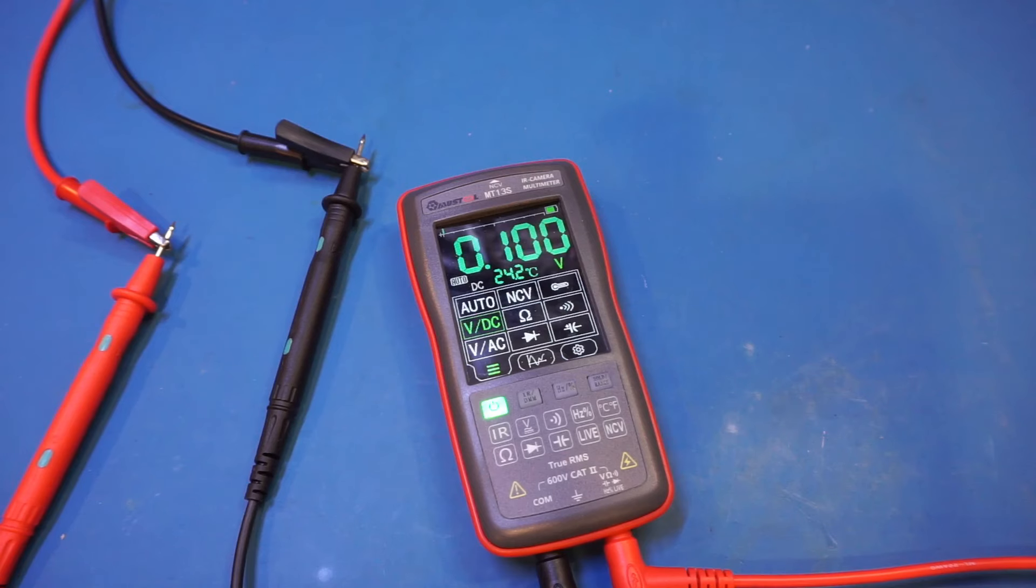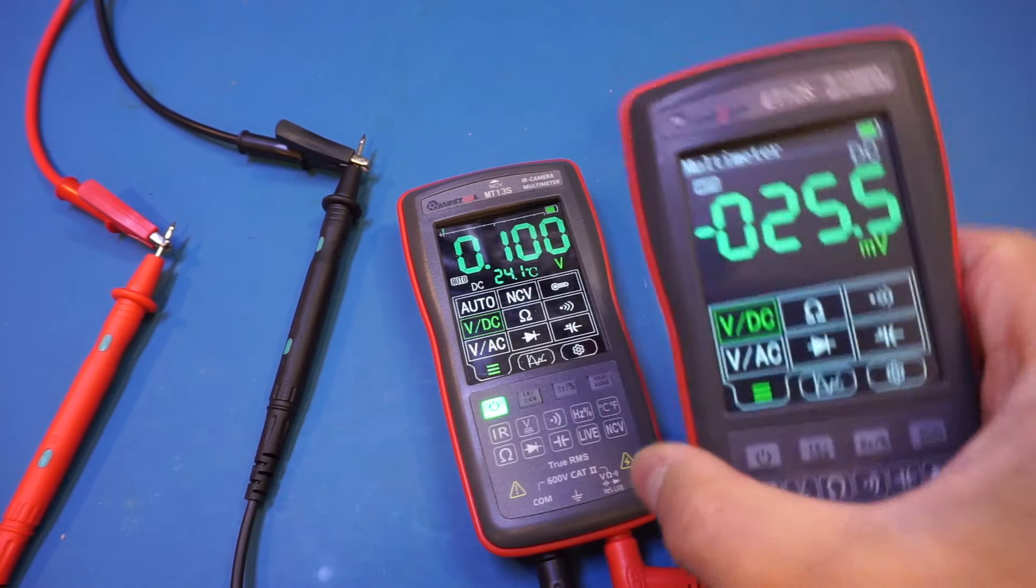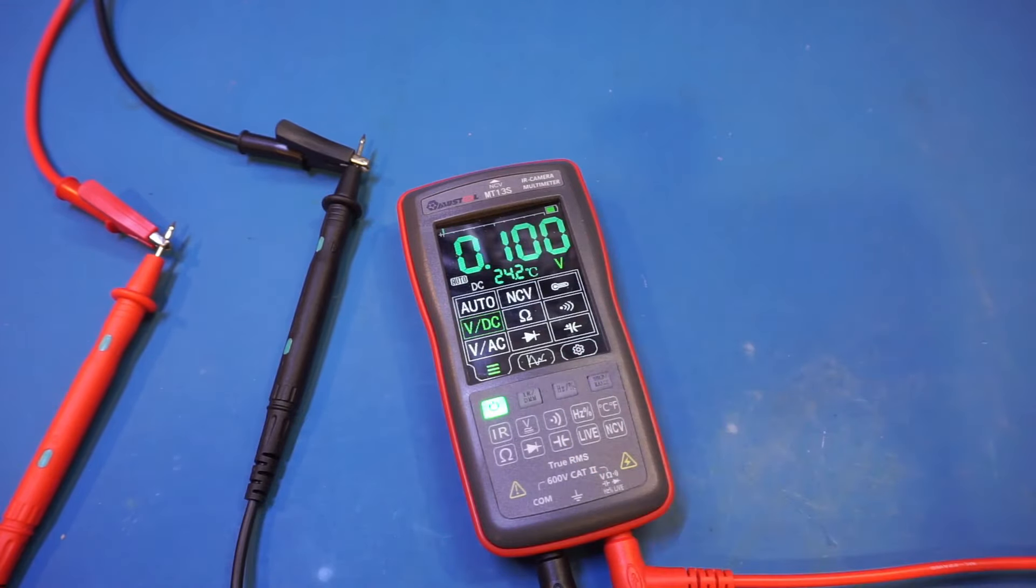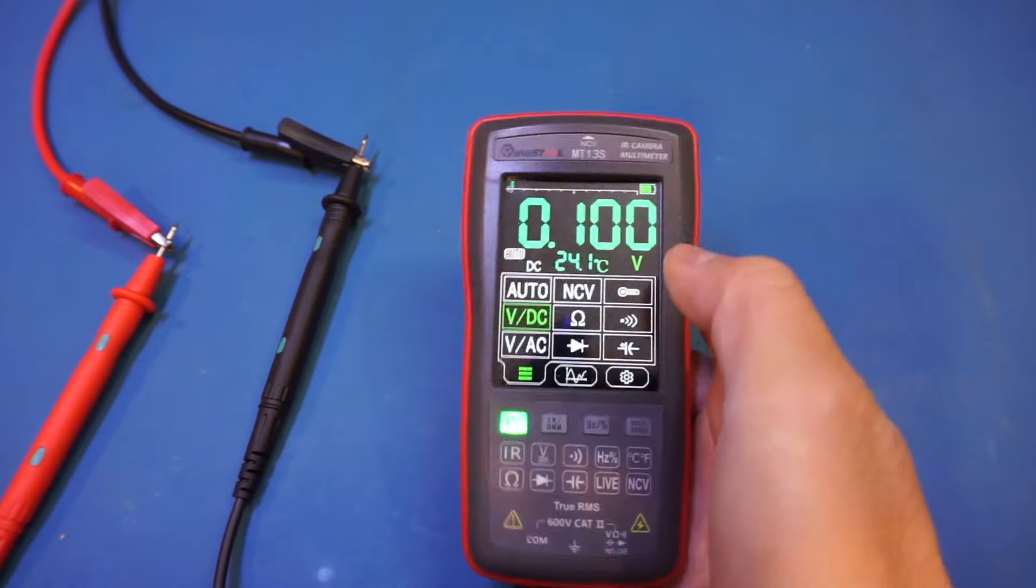Another thing I noticed is that in the millivolt range, for some reason, we don't get the last digit here. Now, this is in auto mode, and if you take a look at ET12S, you can see that the millivolt range has a 0.1 millivolt resolution, whereas here we only get down to 1 millivolt.